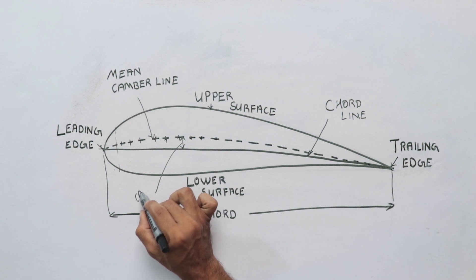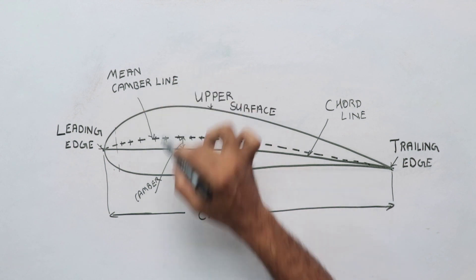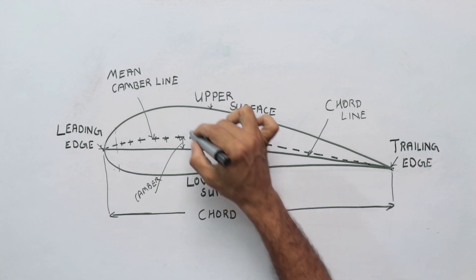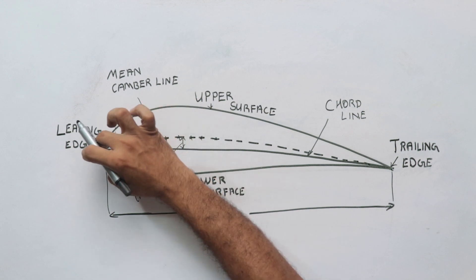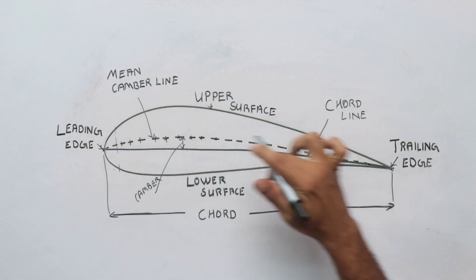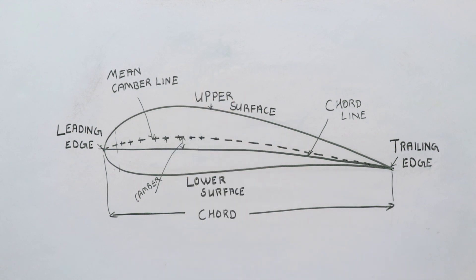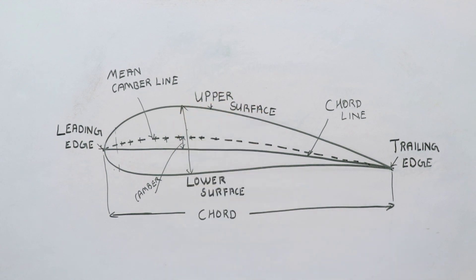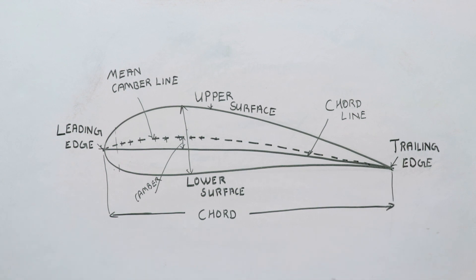The mean camber line gives the maximum distance of camber. One important point is thickness — the thickness of an Aerofoil from the leading edge to the trailing edge represents its maximum thickness. Different Aerofoils have different characteristics, so we need to discuss basic Aerofoil types.